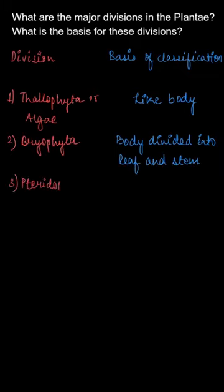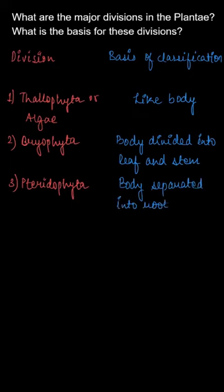The next one is Pteridophyta, in this P is silent. So in Pteridophyta, the body is separated into three parts: roots, stem, and leaves.